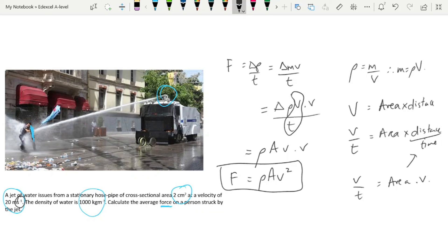Now that we have our equation, let's just substitute our values from here in. So our force is going to be 1000 kilograms per meter cubed times 2 times 10 to the minus 4 meters squared because it has to be a meter squared. 1 centimeter is times 10 to the minus 2 meters and therefore 1 centimeter squared is times 10 to the minus 4 meters squared times our velocity 20 squared. Giving us a force of 80 newtons.